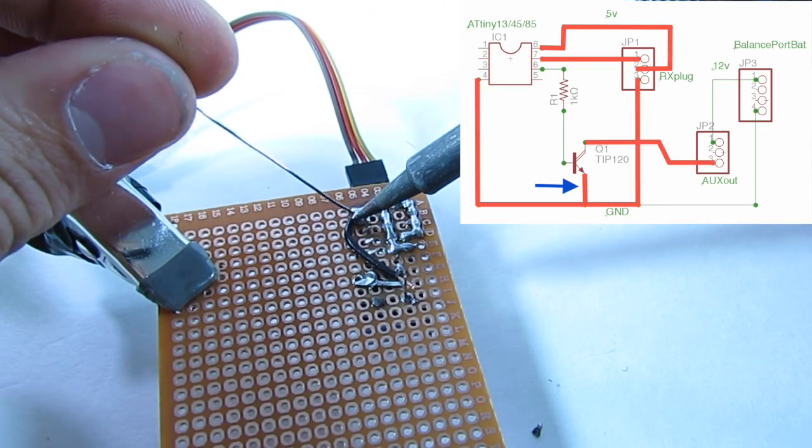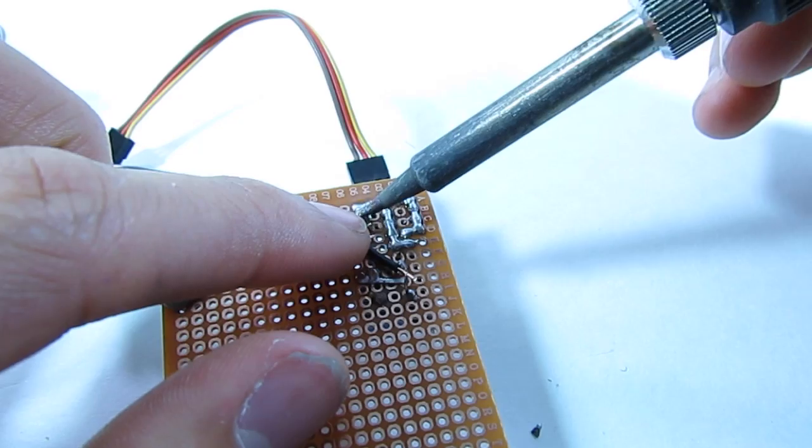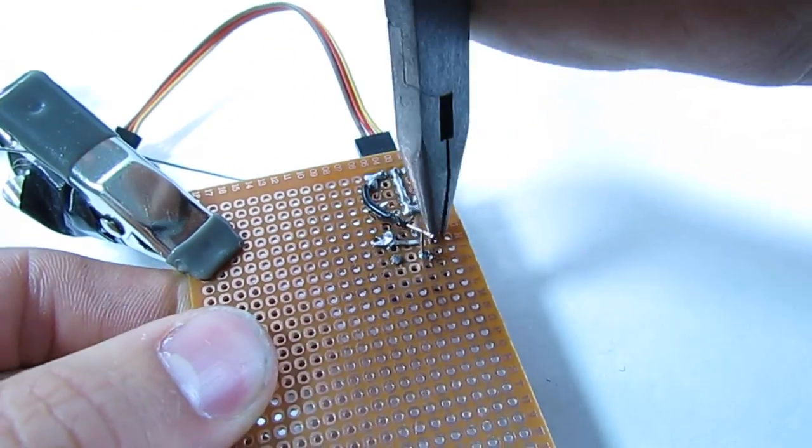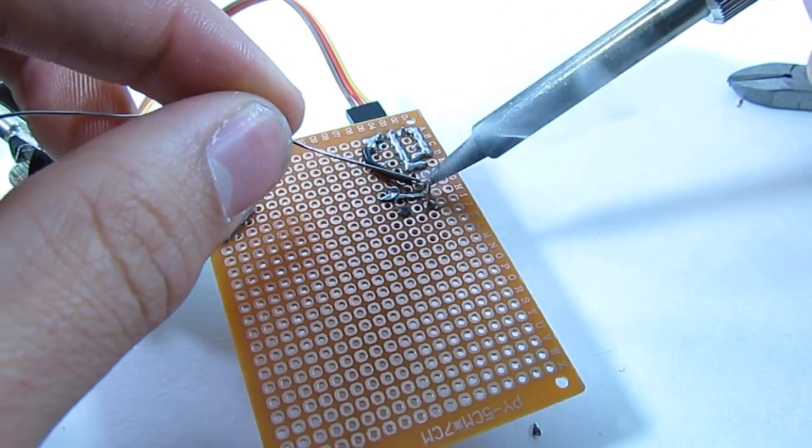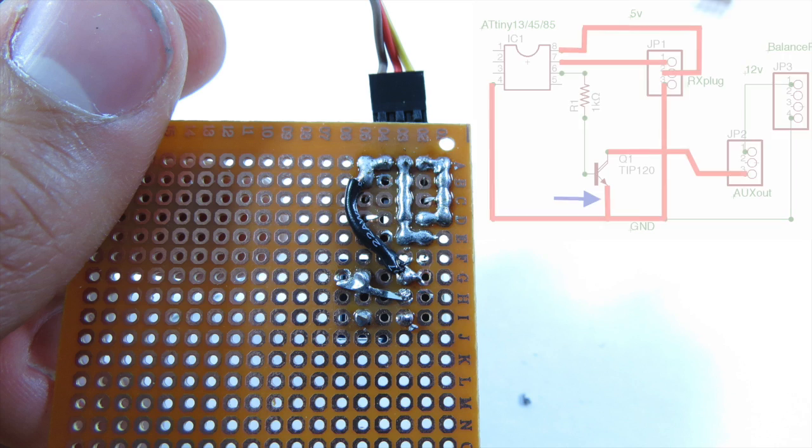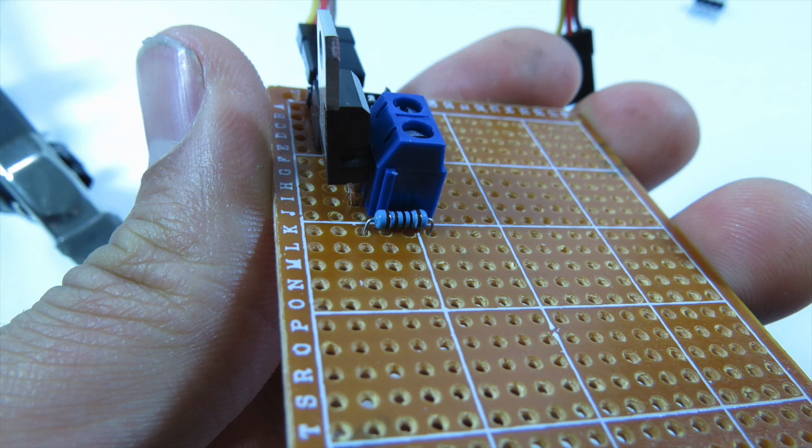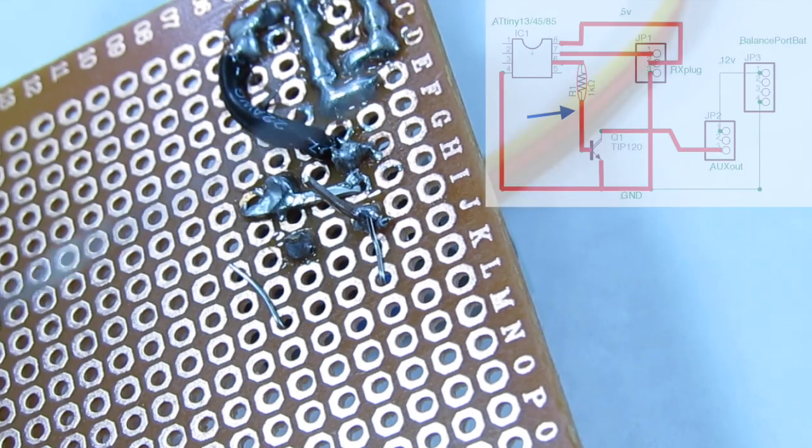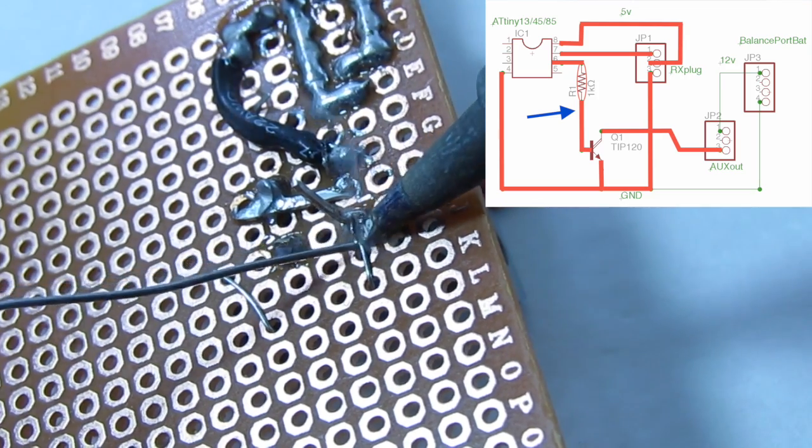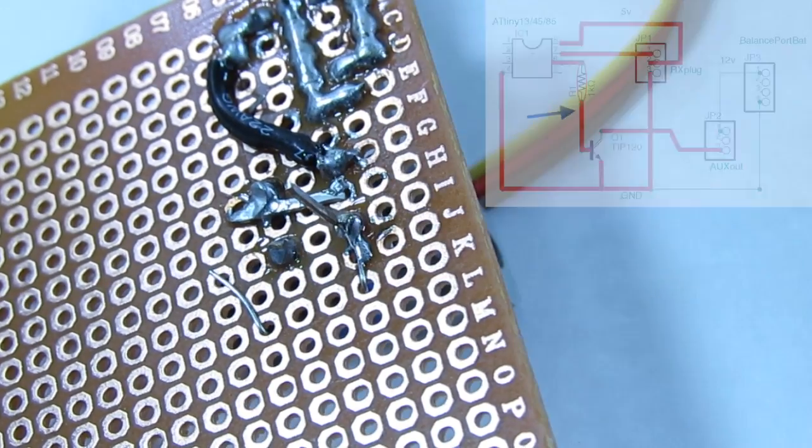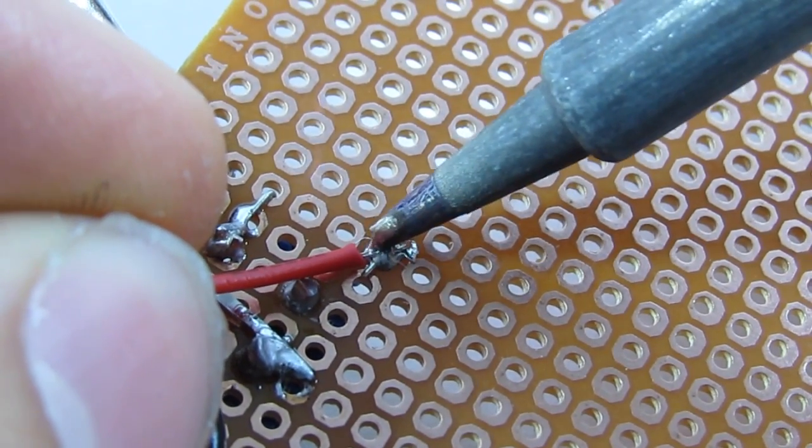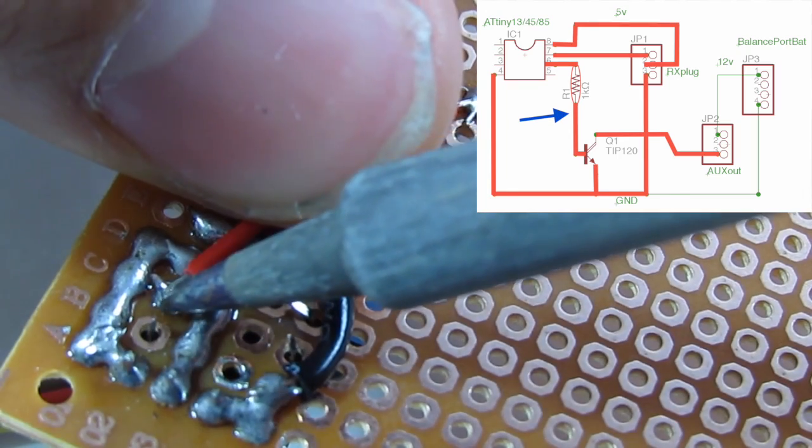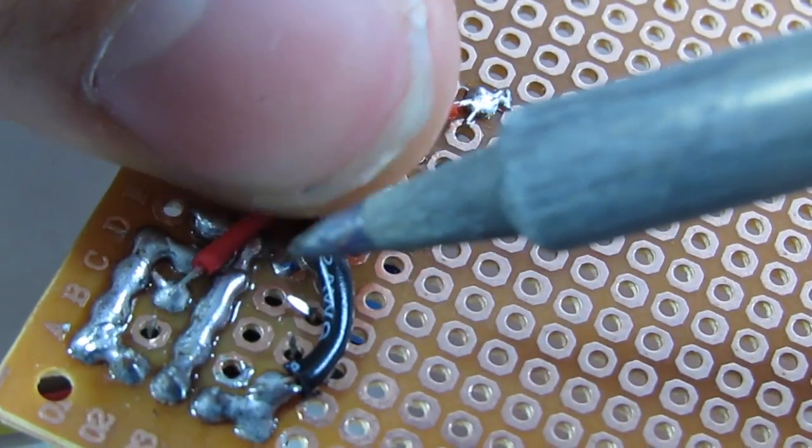Solder a jumper wire from pin 4 on the ATtiny to the emitter of the transistor. Keep all the leads trimmed and make sure there are no connections shorting out. Place the 1k resistor in the breadboard as shown, and solder one end to the base of the transistor. The other end of the 1k resistor gets connected to pin 6 using a small jumper wire. This one might be a little bit tricky. Again, check all your connections and make sure nothing is shorting out.